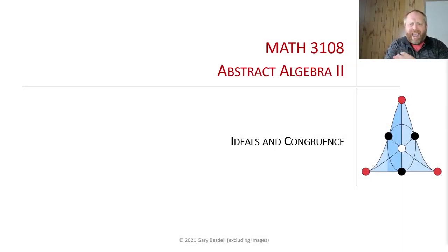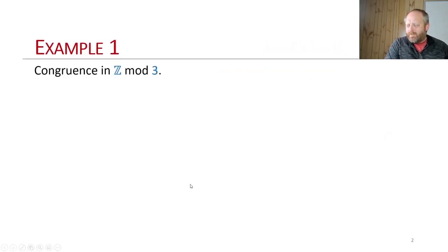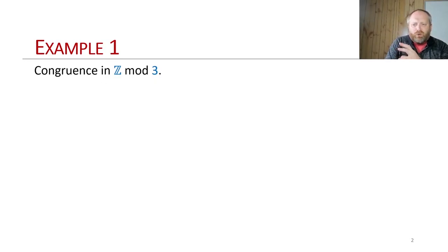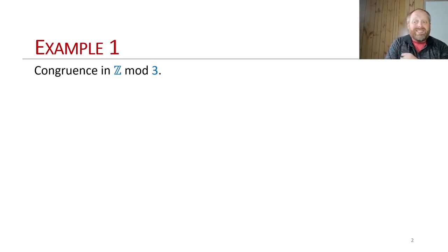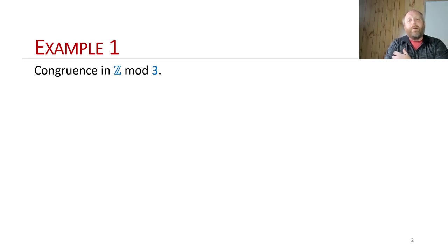Before we begin, let's look at two examples. Over these two examples, we're going to try and link congruence to being elements in a subring. We'll look at congruence in Z mod 3, dealing with the integers mod 3. Then the next example will deal with polynomials mod a specific polynomial, and we'll see how these two things relate to subrings.